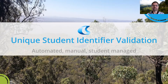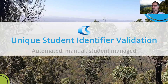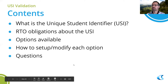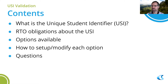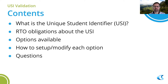So the form won't actually submit until it's validated — effectively you're getting enrolment forms that are completely validated with regards to USI. That can be useful if you've got a lot of problems in that area and you're not too fussed about people being put off. Today we'll cover what the Unique Student Identifier is, RTO obligations, validation options available, how to set up and modify each option, and some questions at the end to check you've been listening.